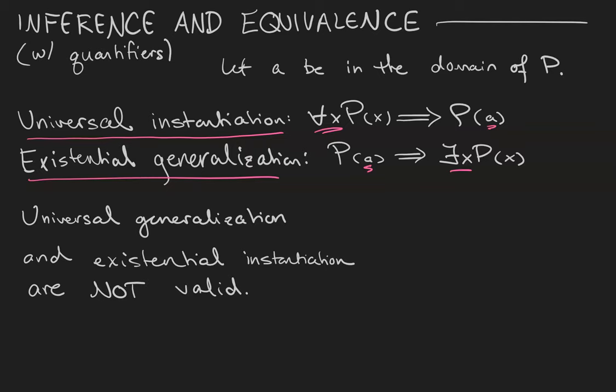Be aware that universal generalization and existential instantiation are not valid. So what are those? Universal generalization is when you start from one object and conclude it's true for all objects.